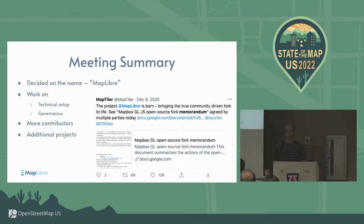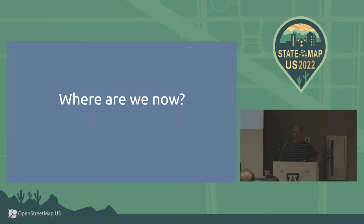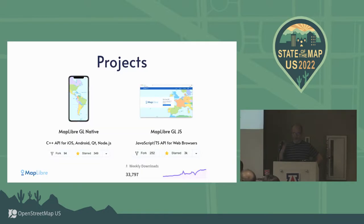So the first meeting summary was: let's work on this together, let's settle on a name, and we need more people. So where are we now?